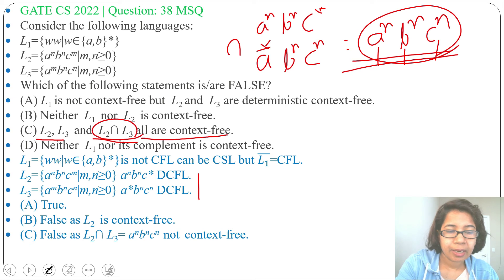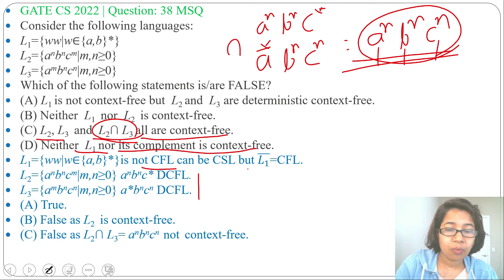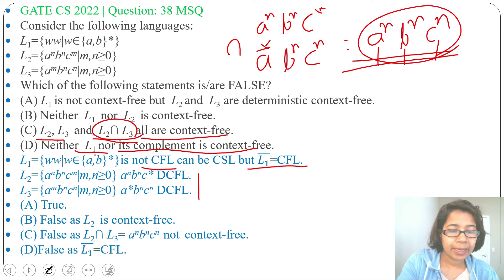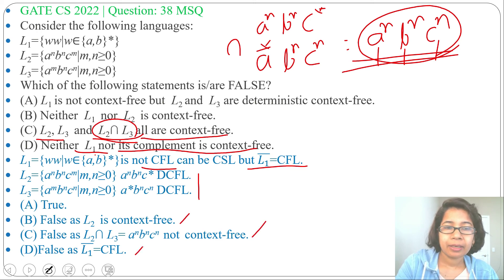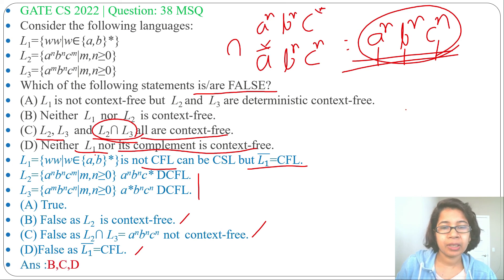Option D: Neither L1 nor its complement is context-free. L1 is not context-free — true. But the claim that its complement is also not context-free is false, because L1 complement is context-free. So Option D is false. We found Option A is true; Options B, C, and D are false. Since the question asks which statements are false and this is a MSQ, the answer is Options B, C, and D.